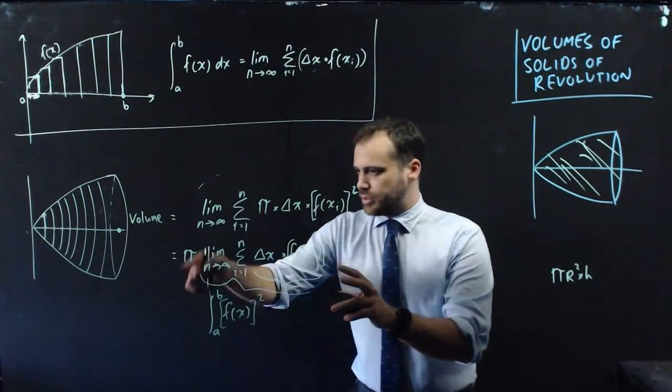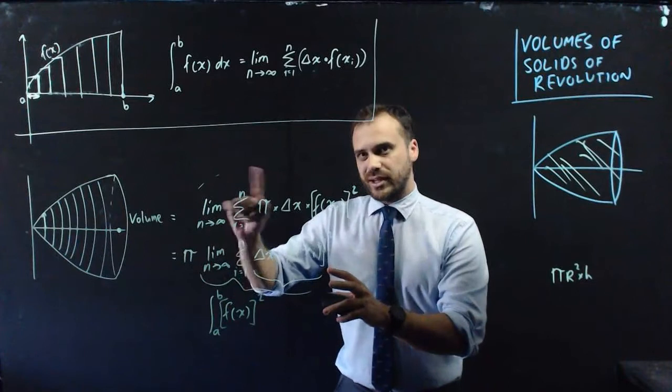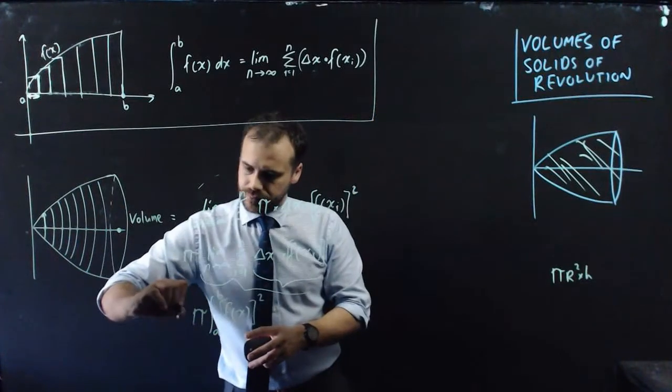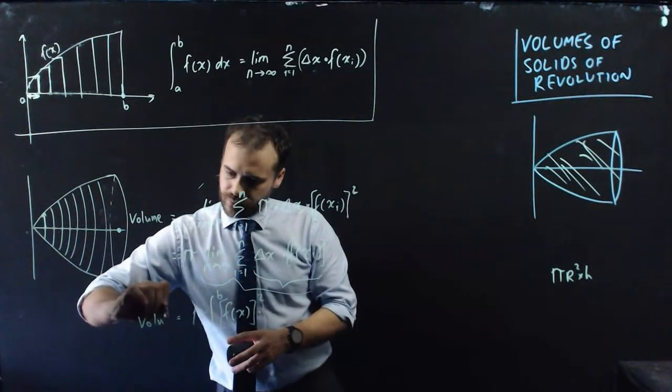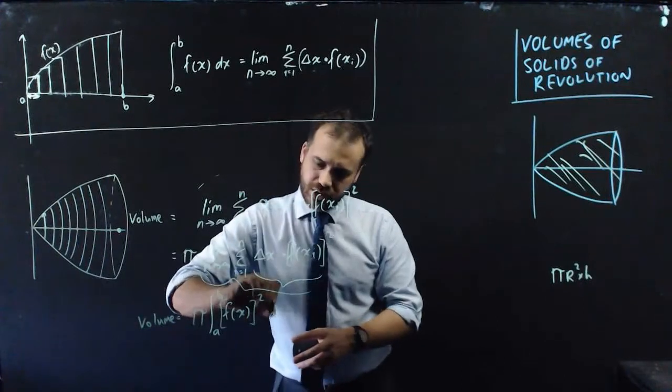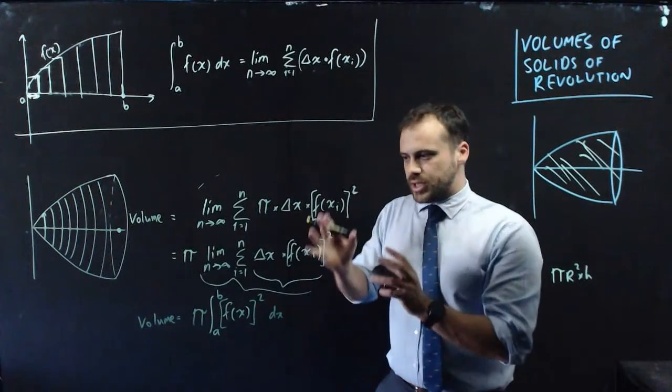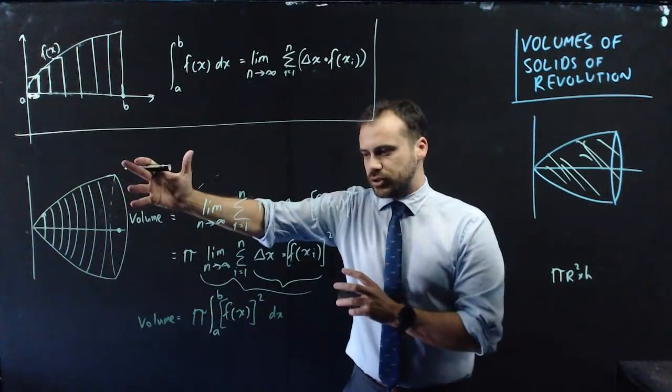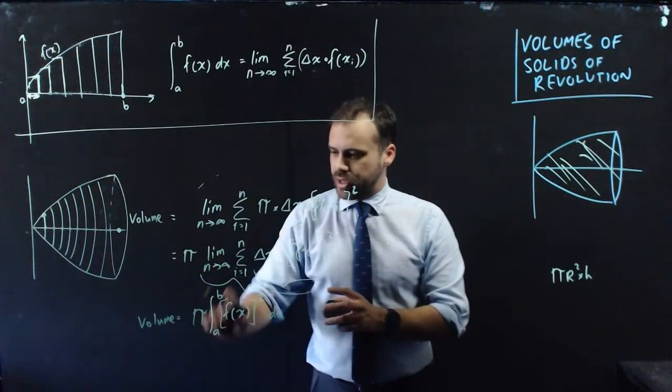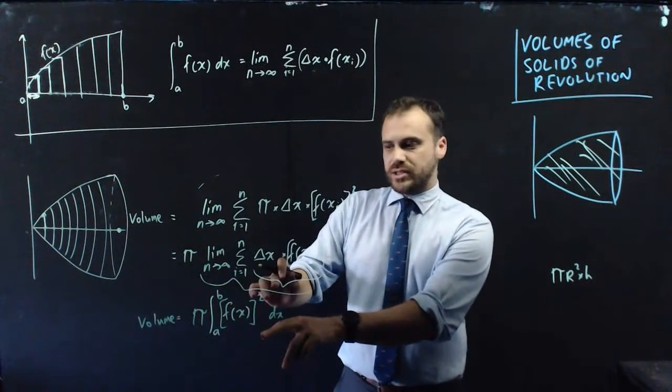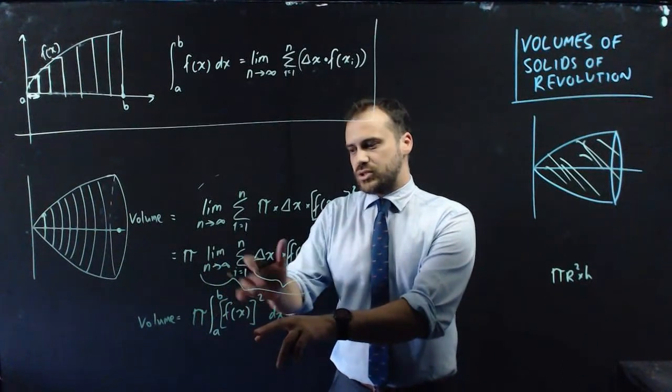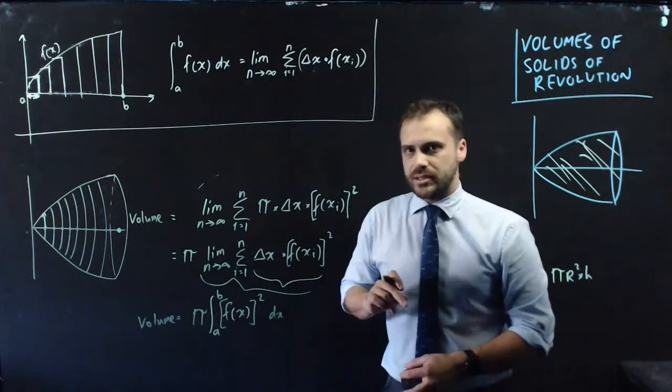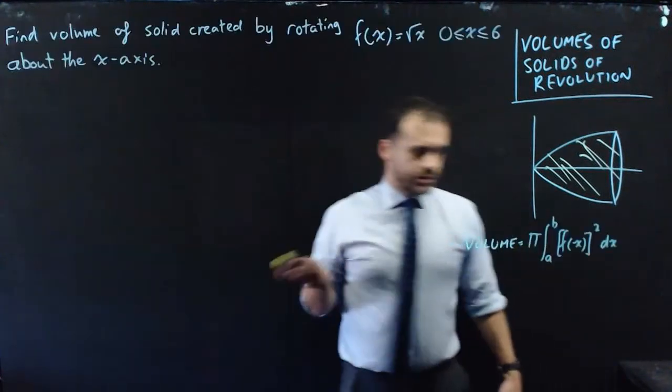And what am I left with? Well, I've got this pi out the front that I can't forget. I'm really finished here now. What we're saying is that the volume of solid of revolution is equal to pi times the integral of f of x squared, between b and a with respect to x.